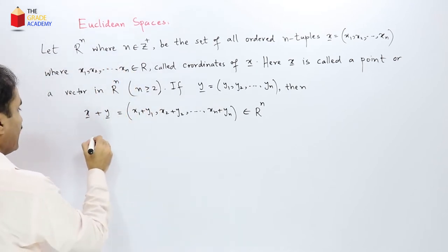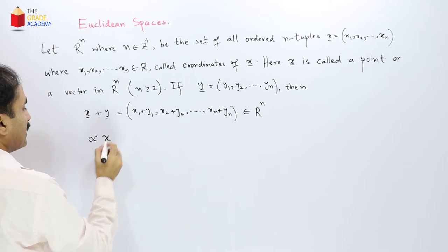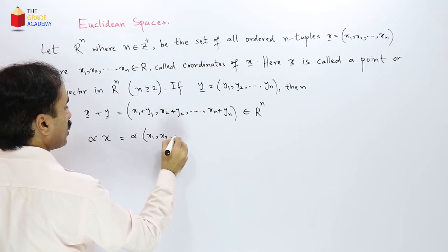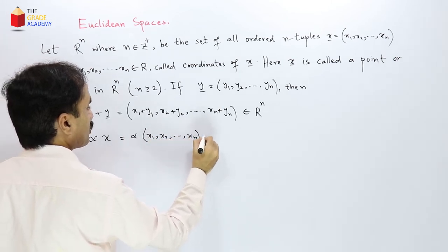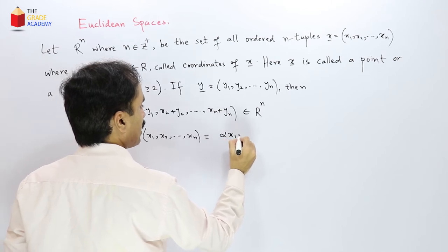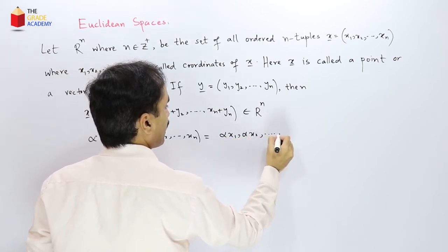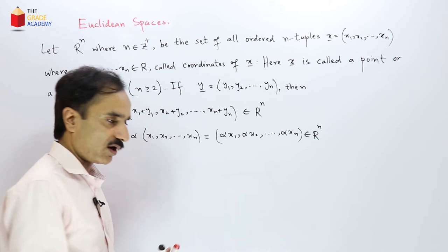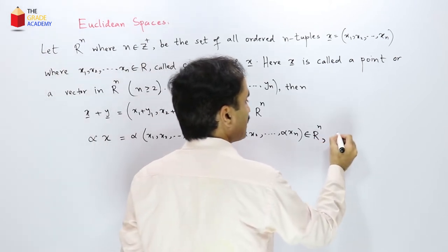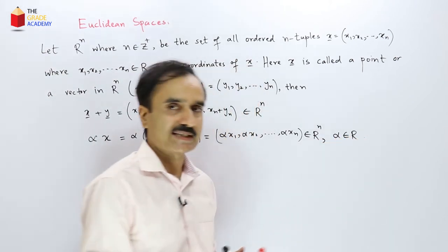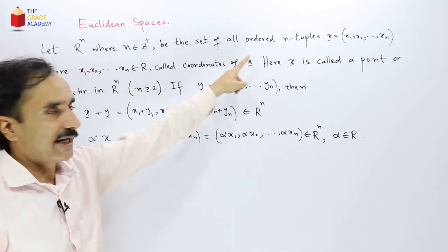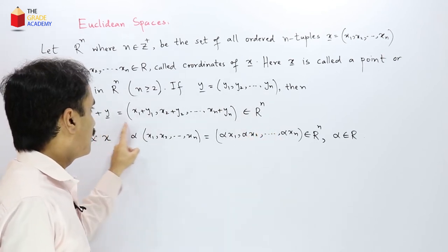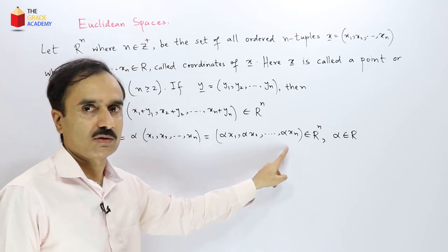Similarly here any alpha times x which is alpha times x1, x2 up to xn. So this will be equal to alpha times xn. So this is also an element of Rn. So here alpha is any real number. We call it a scalar. So this set Rn as we can see is closed under addition and scalar multiplication.